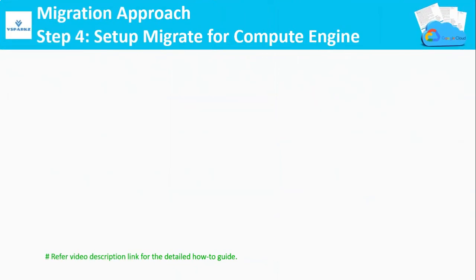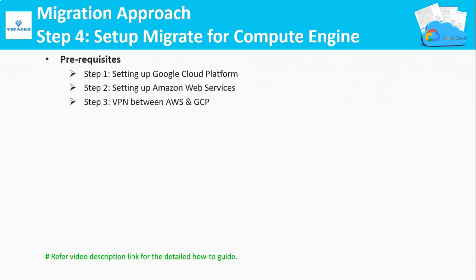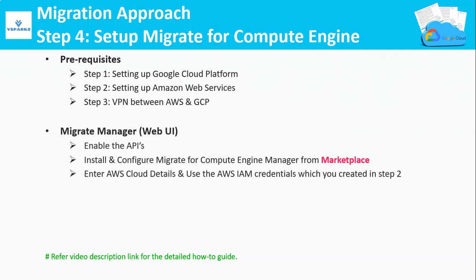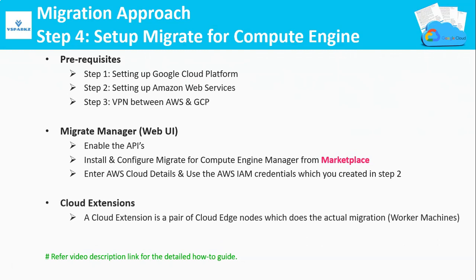Step 4: Set up Migrate for Compute Engine. Before executing step 4, you should have completed steps 1, 2, and 3 — that's going to be our prerequisite. Next, you need to install and configure Migrate for Compute Engine from Google Cloud's Marketplace. Once you install the Migration Manager, log in to the web console and create the cloud extension, which will create a pair of worker nodes to do the actual migration task.